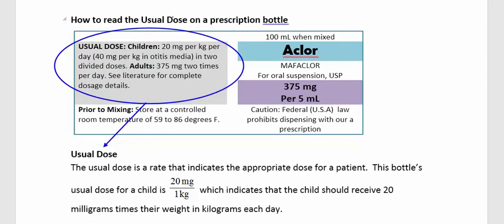How to read the usual dose on a prescription bottle. Every medication label will have a usual dose listed. They tell you — in this case, this one has a usual dose for children, which is 20 mg per kg per day.